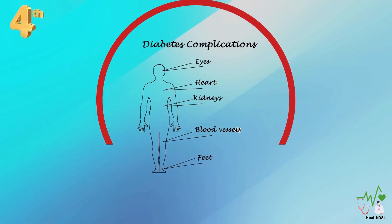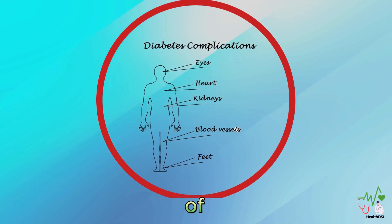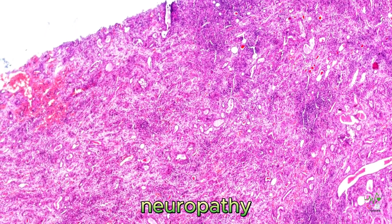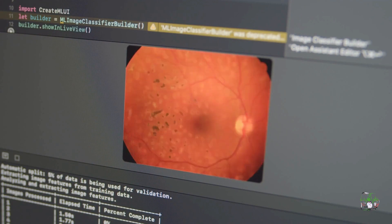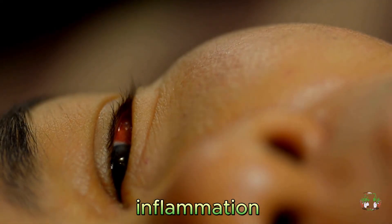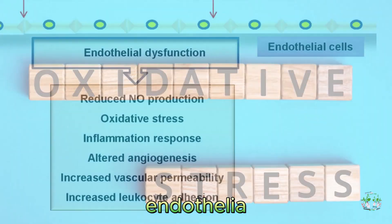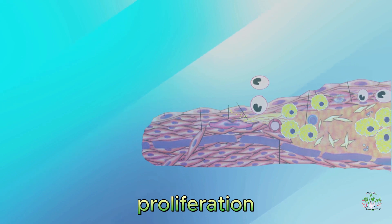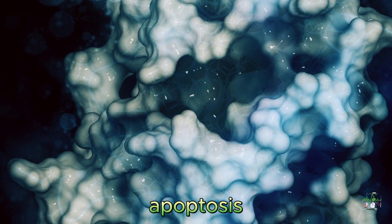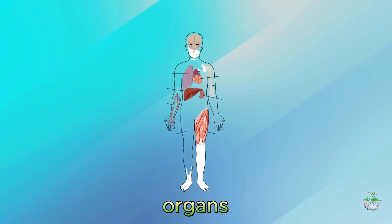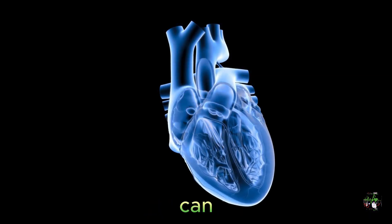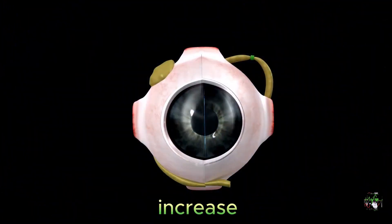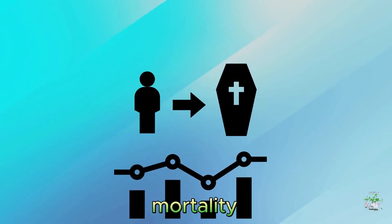Fourth, ceramides can also contribute to the development of diabetes complications, such as cardiovascular disease, nephropathy, neuropathy and retinopathy. Ceramides can cause inflammation, oxidative stress, endothelial dysfunction, vascular smooth muscle cell proliferation, fibrosis and apoptosis in various tissues and organs. These processes can damage your heart, blood vessels, kidneys, nerves and eyes, and increase your morbidity and mortality from diabetes.